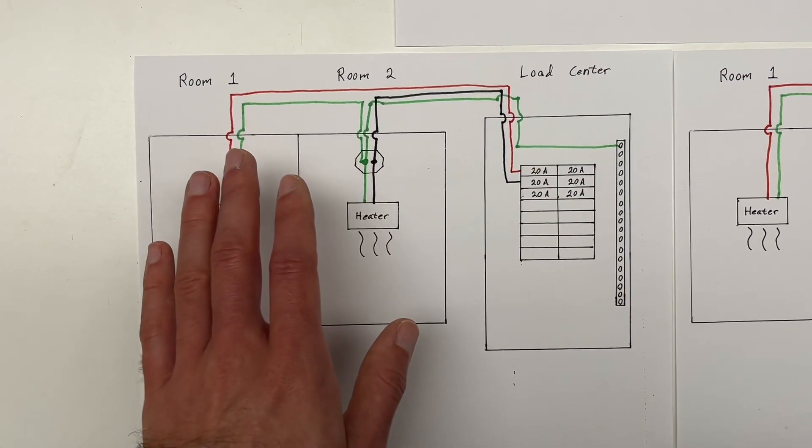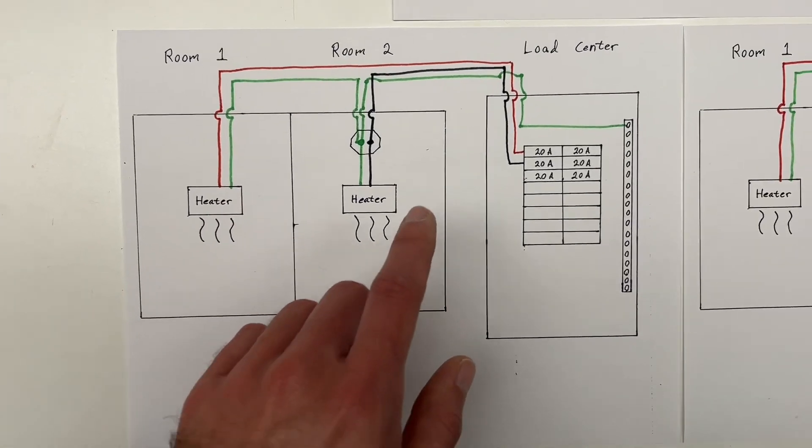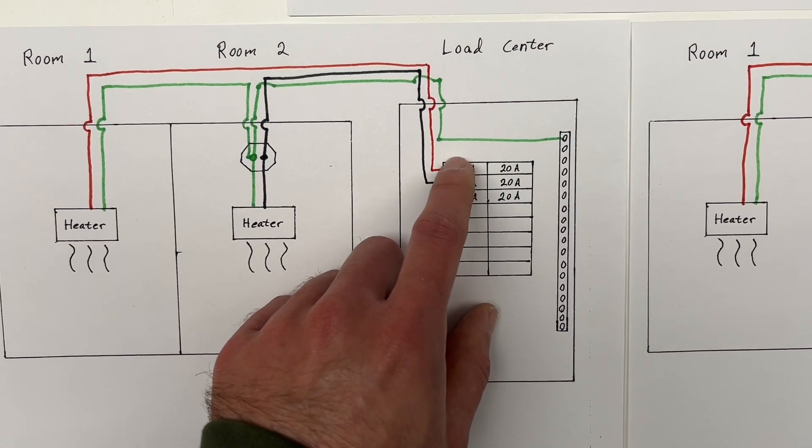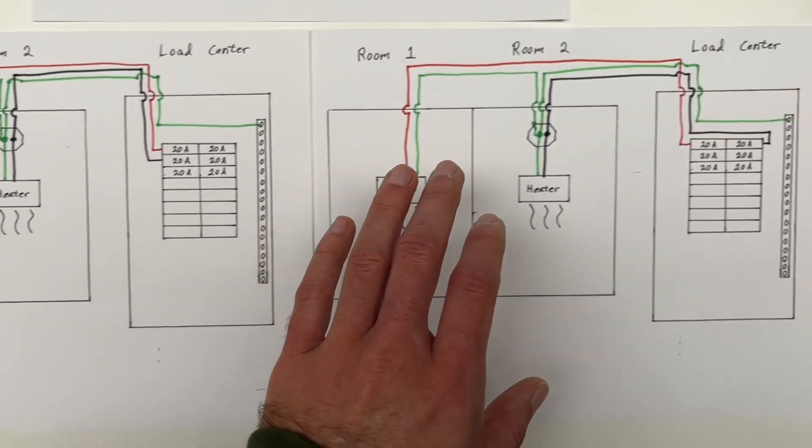This is okay, but you have to do it safely, which means that you have to run your red and black wires to vertically adjacent breakers. What happens if you don't do that?